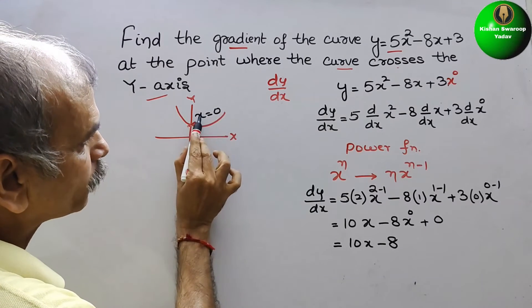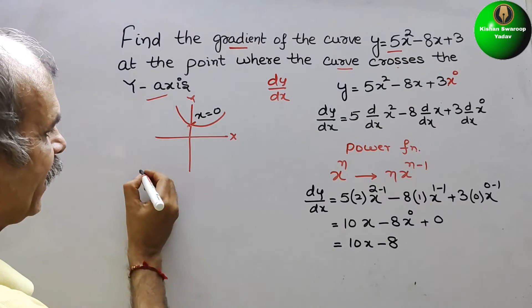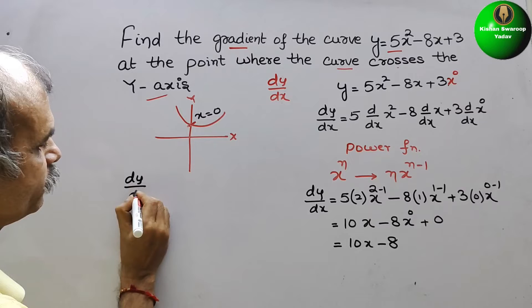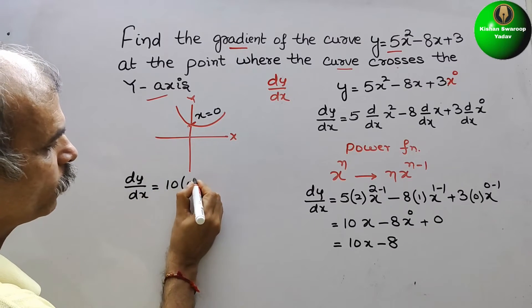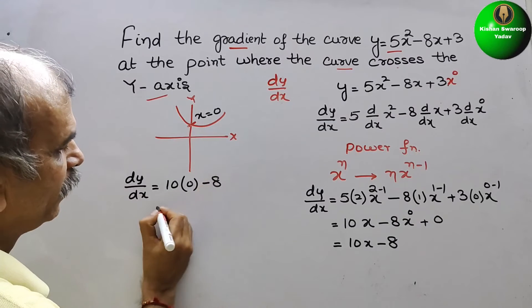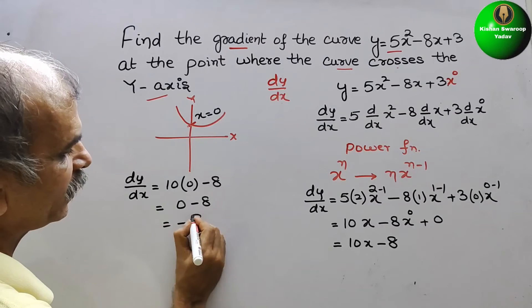So now we will substitute x is 0 here. So we will get dy by dx is equal to 10 into 0 minus 8. That is equal to 0 minus 8 is equal to minus 8.